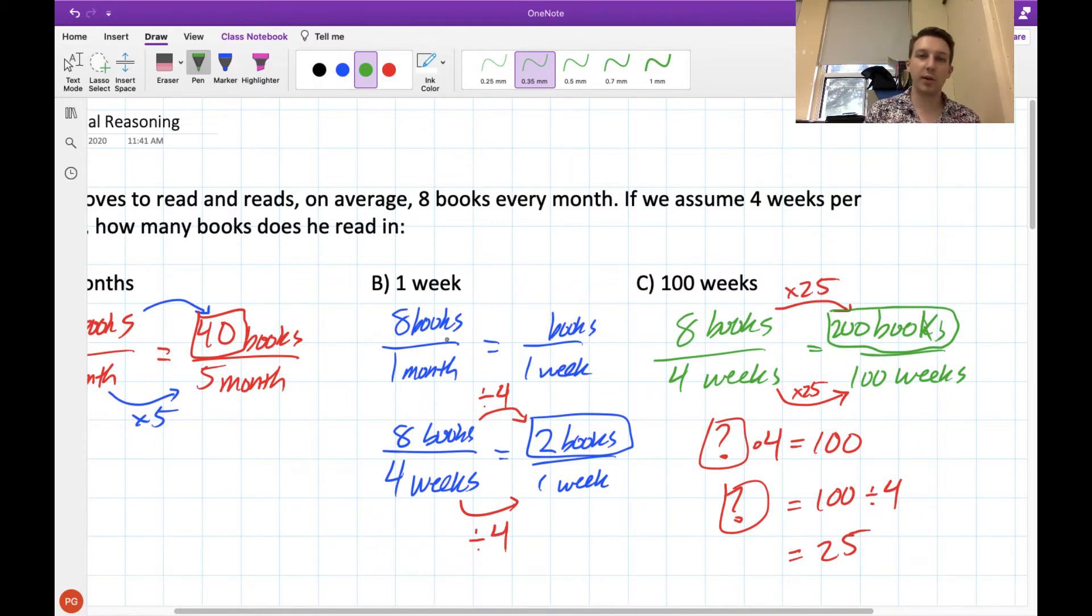So this is an example of a problem where using the fact that this rate, how many books he reads every month, stays constant, we can answer questions about how long it would take him to read a certain number of books, or how many books he reads in a certain amount of time.